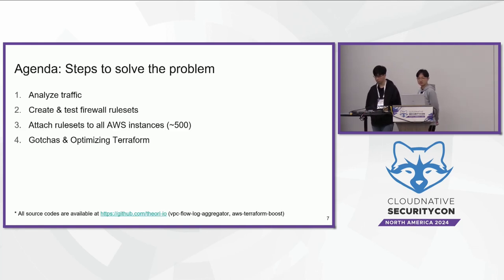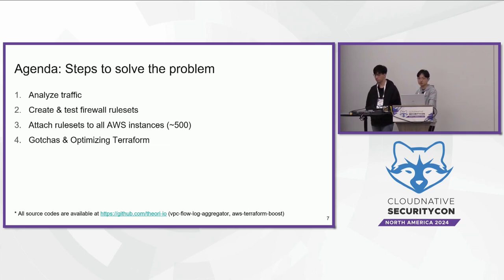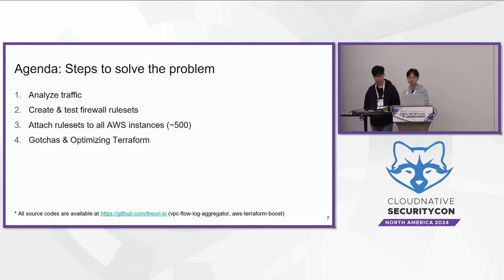Our agenda covers how we solved these problems and challenges, and ultimately we created an open-source tool that lets everyone establish security groups and rules in just a few clicks. First, we'll show how to analyze traffic inside AWS architecture. Second, how to create and test firewall rulesets across 500 instances. Third, how to attach rulesets to all AWS instances — over 500 EC2s, RDSs, and load balancers. Finally, we'll discuss gotchas and optimizations for Terraform and AWS. All source code will be available on our GitHub after this talk.